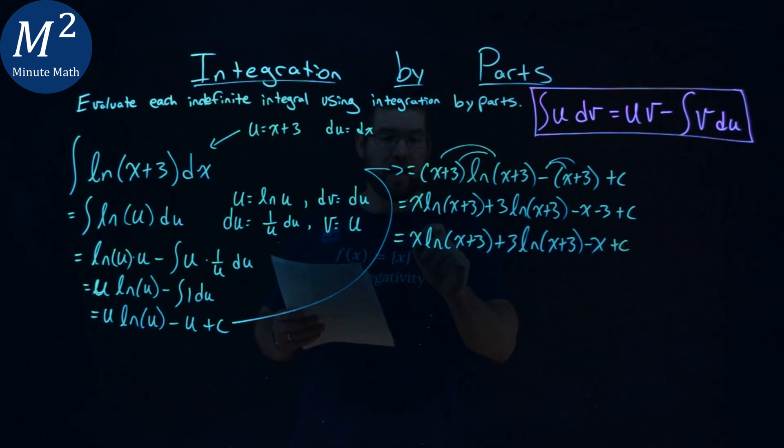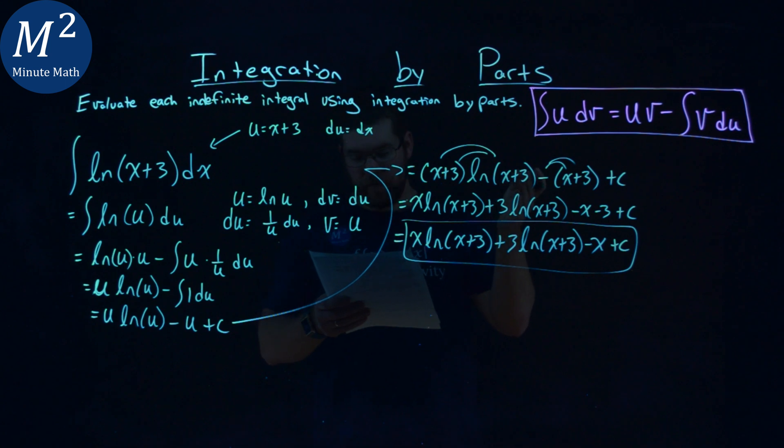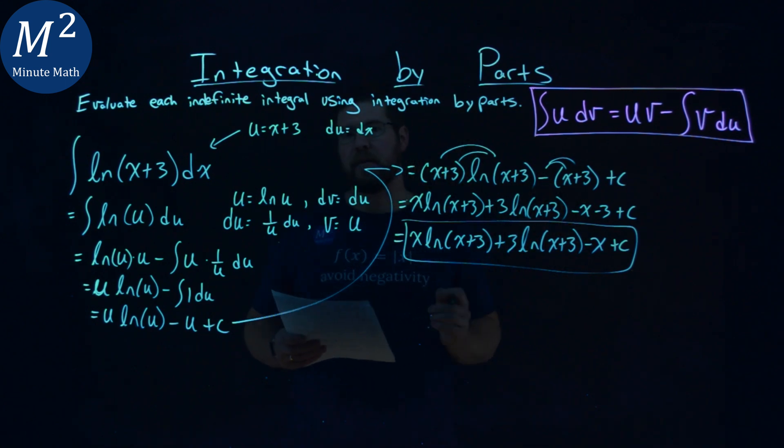And that's it. My final answer here, after it's all said and done, is x times the natural log of x plus 3, plus 3 times the natural log of x plus 3, minus x plus c.